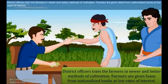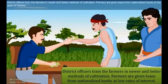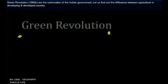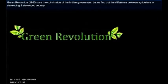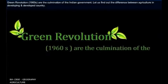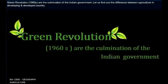District officers train the farmers in newer and better methods of cultivation. Farmers are given loans from nationalized banks at a low rate of interest. The Green Revolution of the 1960s was a major initiative of the Indian government.